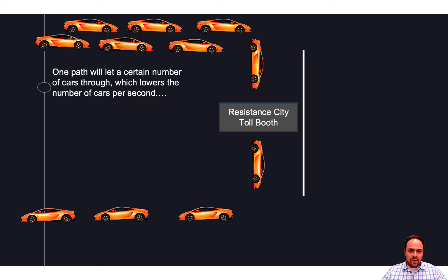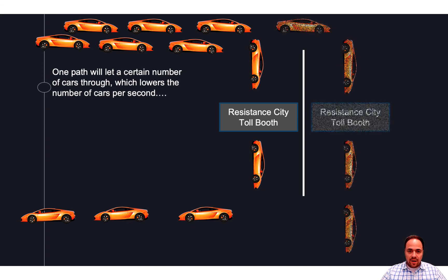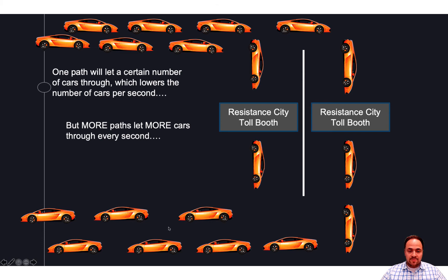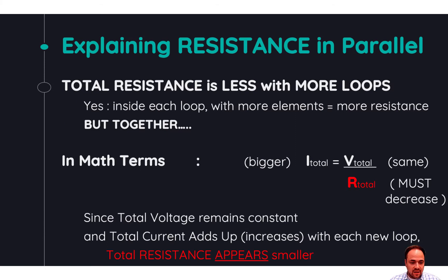To think about this physically, consider cars on a freeway going over a bridge. A certain number of cars want to pass through, but they hit resistance at the toll booth — so the number of cars per second passing through is decreased. Now if I add another toll booth lane — another resistor to the circuit — more cars can pass by each second. Our car current has increased. Yes, we added resistors, but we added another pathway as well, so overall for the entire circuit resistance has actually decreased. Since total voltage stays constant and total current increases with each new loop, resistance overall appears to decrease.